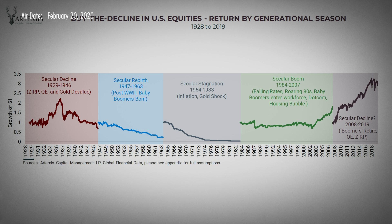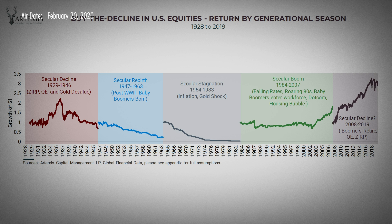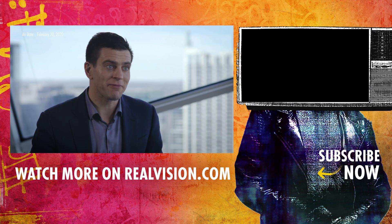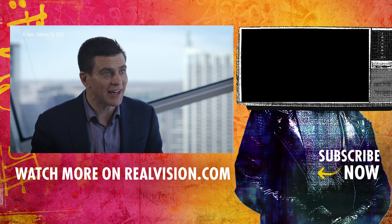One of the strategies we actually tested was buy the dip — how would buy the dip perform going back 90 years? This is very interesting. Buying the dip, you don't think of it as a short volatility strategy, but it is short gamma, or it's short that autocorrelation effect. Well, buy the dip has performed incredibly well over the last 10 years, and really over the last 20 years as central banks have been very reactive to market stress. But if you go back and test buy the dip over 90 years, that strategy goes bankrupt three times — it flat out loses all of its money three times over a 90-year history.